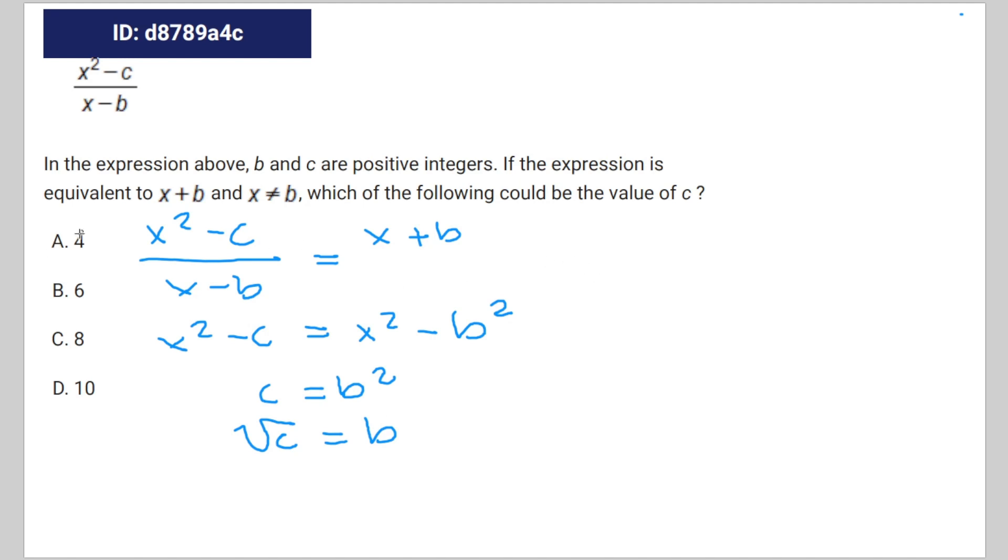And the only value of c in the answer choices that's going to give you a positive integer for b, because they have to be positive integers, is the answer choice of a, 4, which is going to be equal to 2. Therefore, a is the correct answer.